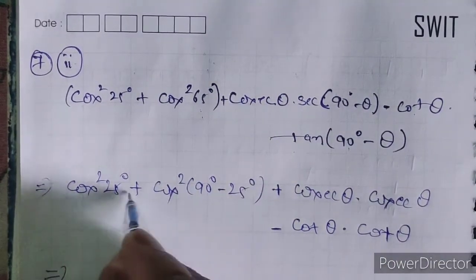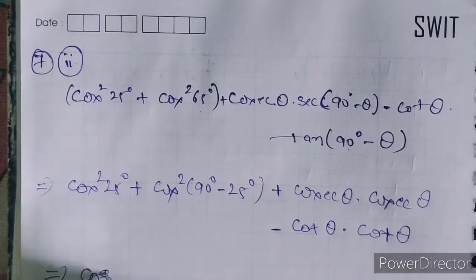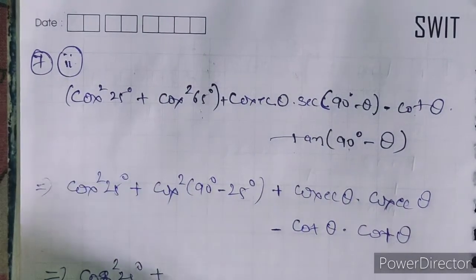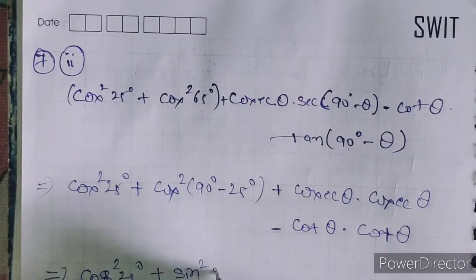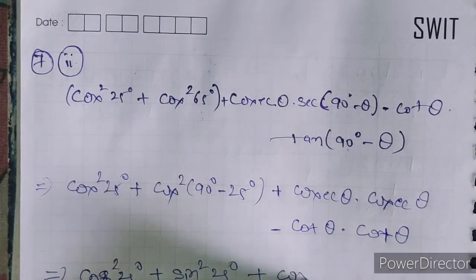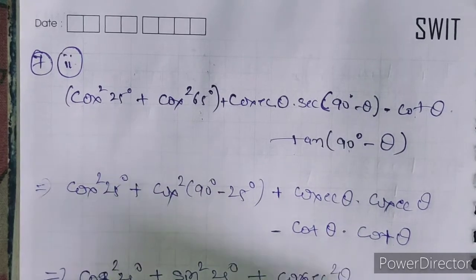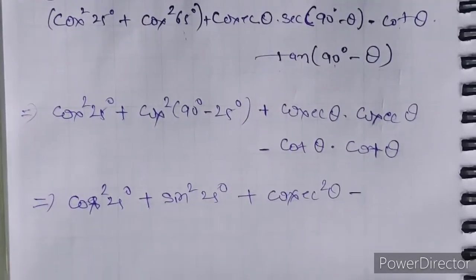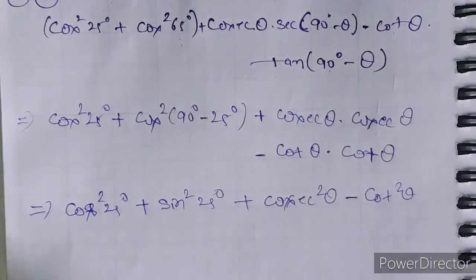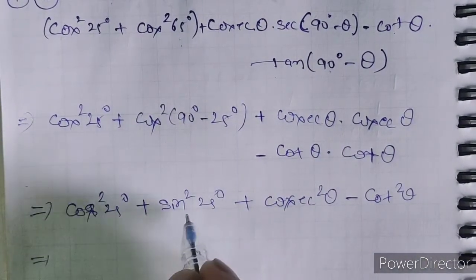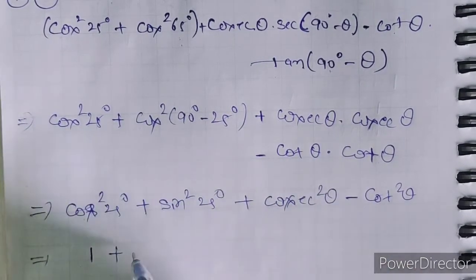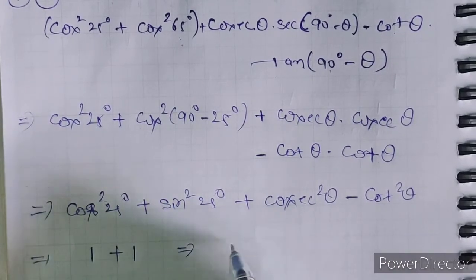So we have cos square 25 plus sin square 25, which equals 1, plus cos square theta minus cot square theta. And cos square theta minus cot square theta — wait, cos theta into cosec theta gives cos square theta, and cot theta into cot theta gives cot square theta; these cancel. So cos square 25 plus sin square 25 equals 1, and cos square theta minus cot square theta cancel, giving 1 plus 1 equals 2.